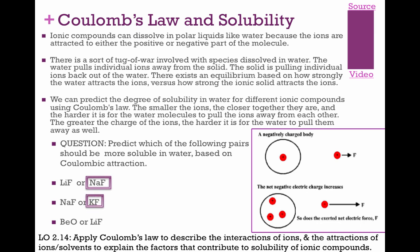Comparing NaF and KF: K is bigger, so the KF bond is not as strong as NaF, making KF more soluble. For BeO versus LiF: the biggest difference is charge — BeO is 2+/2− while LiF is 1+/1−. Higher charge means more attraction, so LiF with lower charges is easier to break apart and more soluble.